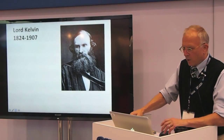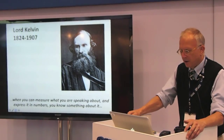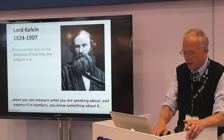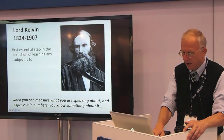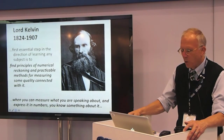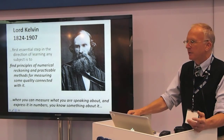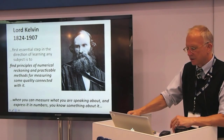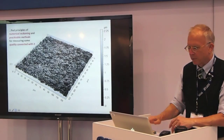Lord Kelvin, one of the greatest scientists and engineers of the 19th century, said you need to be able to express things in numbers. The first essential step is to find some way of measuring it and getting numbers on it. That's one of the things that's happened in surface metrology, particularly in the last 20 or so years — we've gotten much better at measuring, and it's opened up all kinds of opportunities.